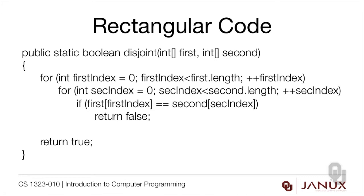Looking at the rectangular code: the outer for loop steps through the first array from zero to less than first.length. The inner for loop marches through the second array from zero to less than second.length. Inside the inner loop, we check if the chosen element in first and the chosen element in second are equal — if so, we return false. If we get through both loops without returning false, then the two arrays are disjoint and we return true. This is a typical rectangular pattern.